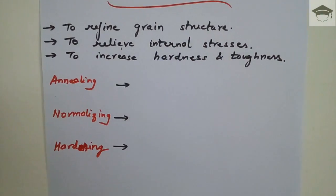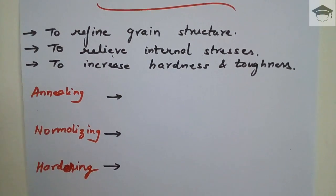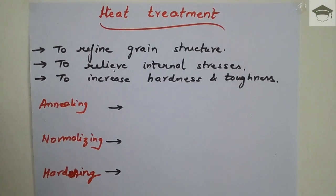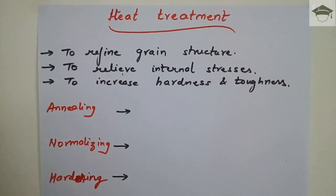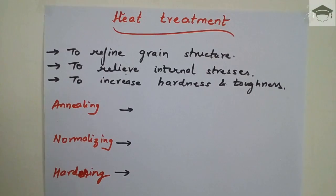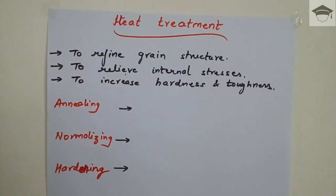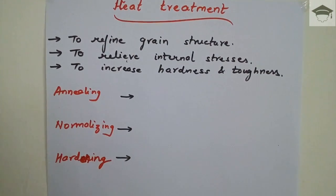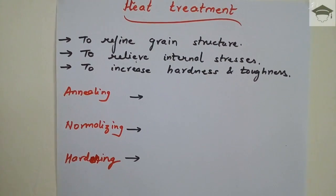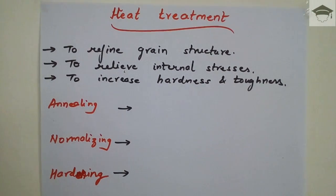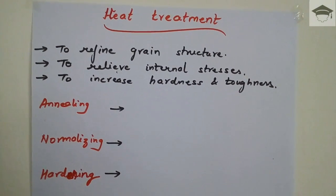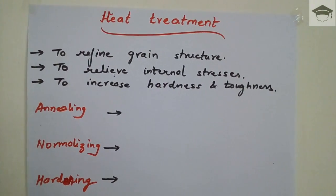There are three main types of heat treatment processes: annealing, normalizing, and hardening. In annealing, the component is placed inside the furnace. Once its temperature rises above the recrystallization temperature, it is kept in the furnace and then allowed to cool inside the furnace itself. As a result of annealing, ductility improves, toughness improves, internal stresses are reduced, and a better refined grain structure is obtained.